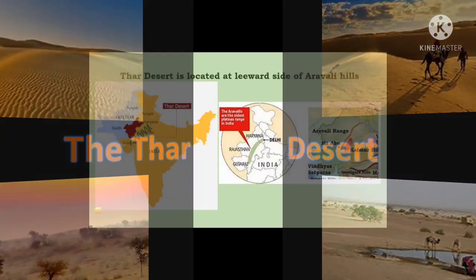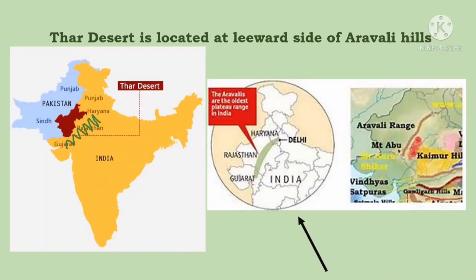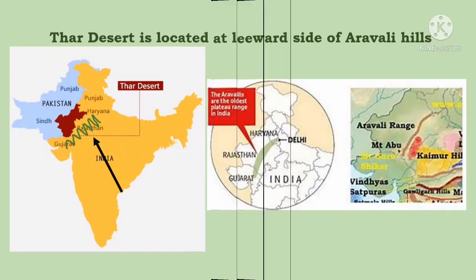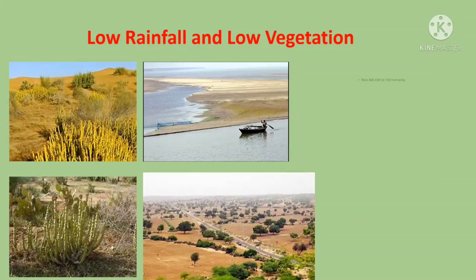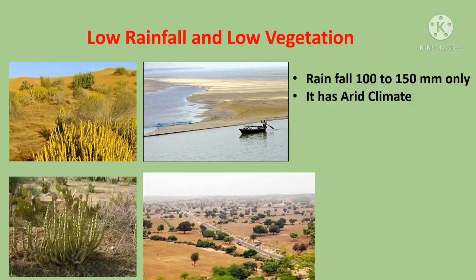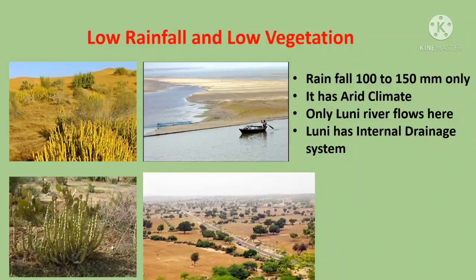The Thar Desert is formed in the north-west direction of India, located on the leeward side of the Aravalli Hills. The annual average rainfall of the Thar Desert is only 100 to 150 mm. It has an arid climate. The only river that flows through the Thar Desert is the Luni river, which has an internal drainage system.